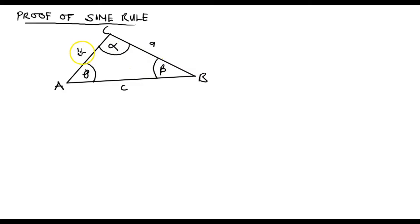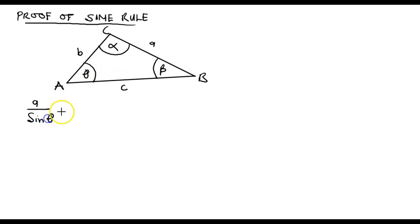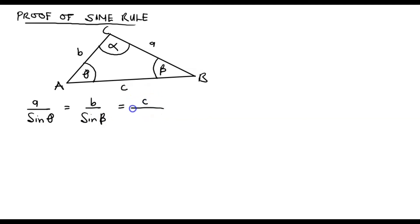So every side of this triangle has a corresponding interior angle that takes charge of it. The Sine Rule is deduced as: side small a divided by the sine of its corresponding interior angle theta, should be equal to the ratio of side B divided by the sine of its corresponding angle beta, and that is also equal to side small c divided by the sine of its corresponding angle alpha.